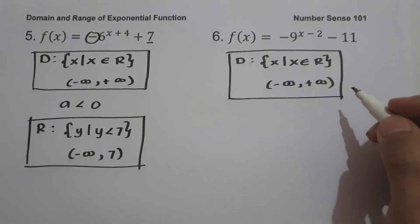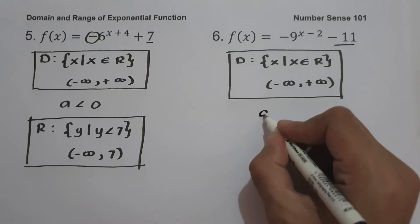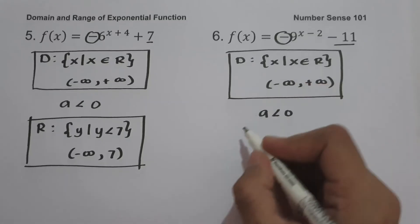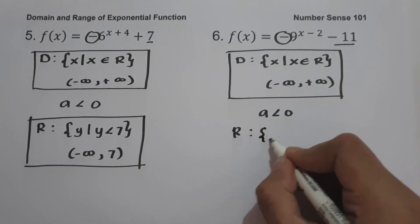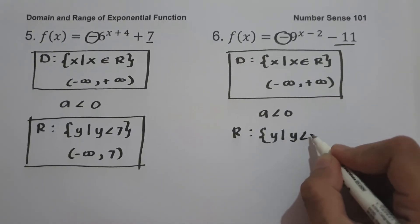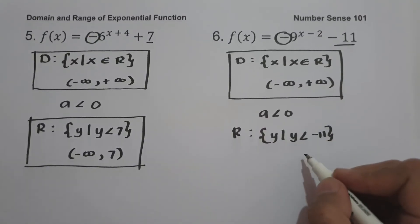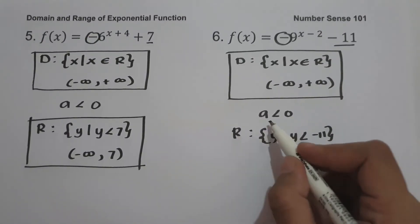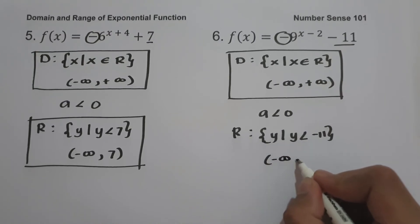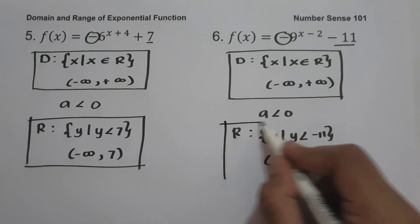To find the range, since our horizontal asymptote is negative 11 and the value of a is less than 0 because we have a negative sign, our range is the set of y values such that y is less than negative 11. In interval notation, from negative infinity up to negative 11, where negative 11 is not included.